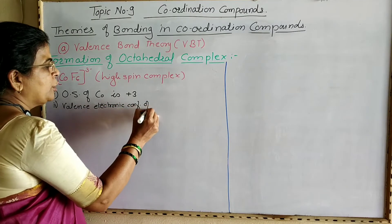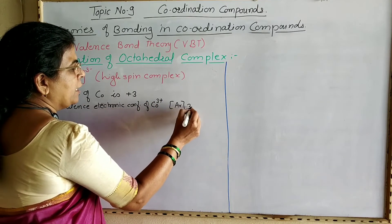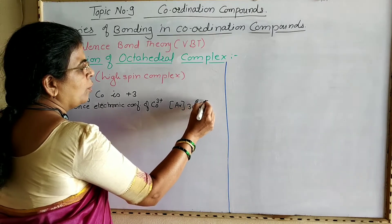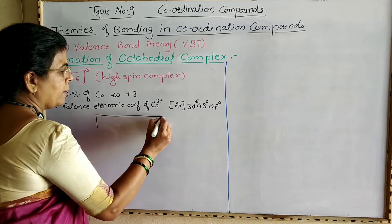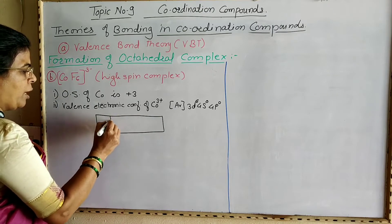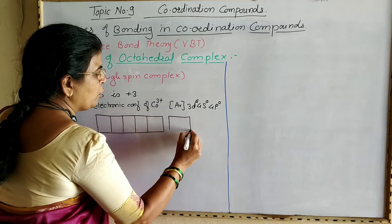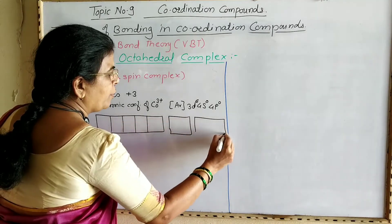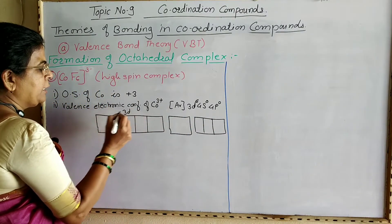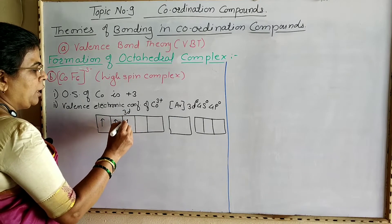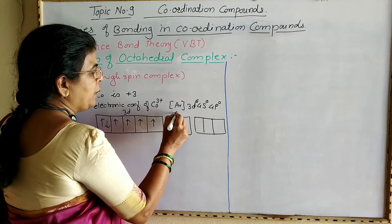The valence electronic configuration of Co³⁺ is Ar 3d⁶ 4s⁰ 4p⁰, which we can write in block notation. In the 3d orbit there are 6 electrons: 1, 2, 3, 4, 5, and 6. Then this is the 4s orbital and this is the 4p orbital: 1, 2, 3.